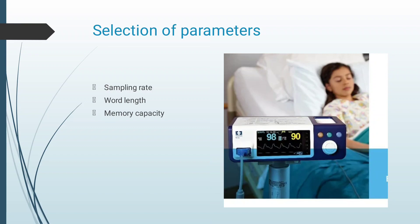Selection of parameters includes sampling rate, word length, and memory capacity. Sampling rate: signals with high bandwidth require sampling to be done at a high rate, which requires larger memory to store. A sampling rate of 150 or above is satisfactory. Word length: ECG is encoded in digital form — it is coded in a pre-amplifier and labeled 0 to 1. The accuracy of conversion depends on the number of bits used; greater the number of bits, greater the resolution.